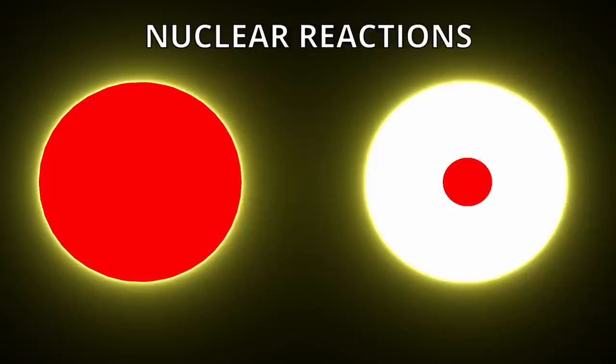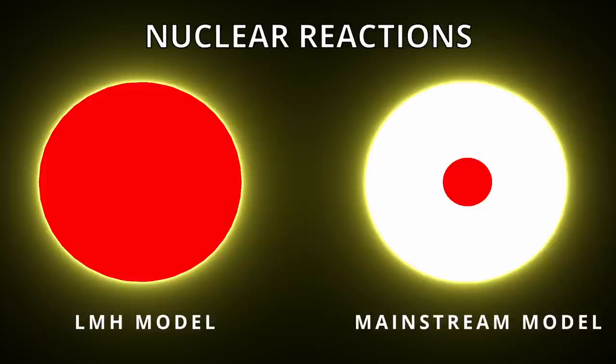Instead he views that nuclear reactions occur throughout the entire volume of the sun. The important point to realize is that in this model the sun is still a simple thermonuclear reactor, but it just occurs everywhere rather than only at the centre.